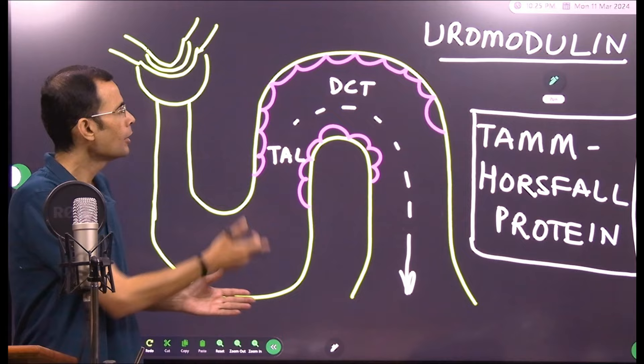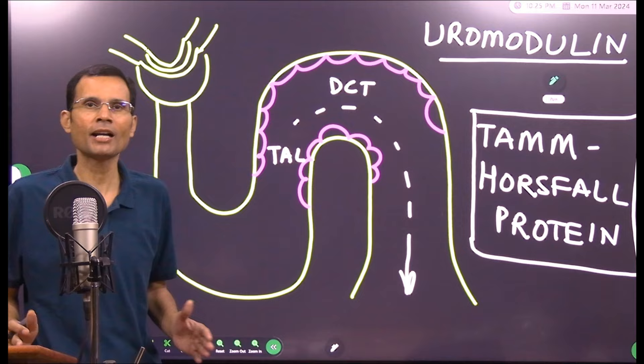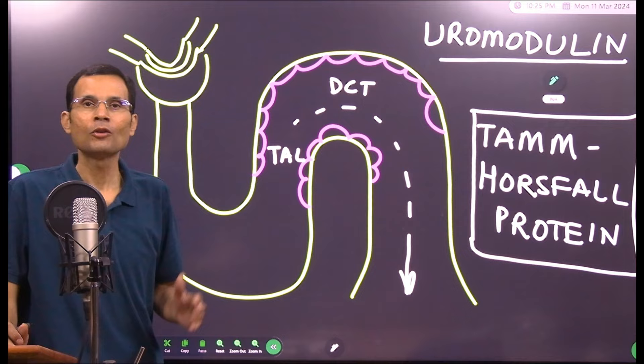Plasma concentration of this substance is zero and that means theoretically speaking, hypothetically speaking, clearance of this Tamm-Horsfall protein or uromodulin will be infinity. Now let's just find out what this protein is all about.